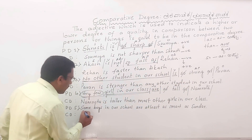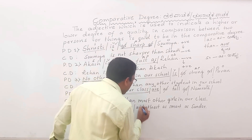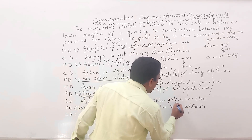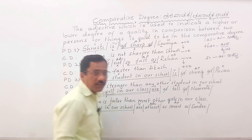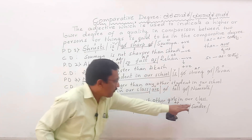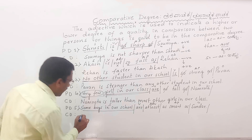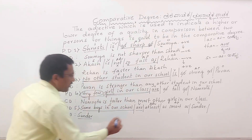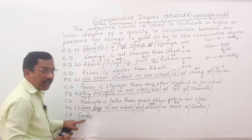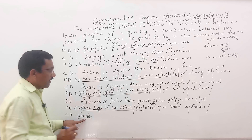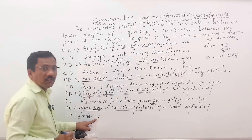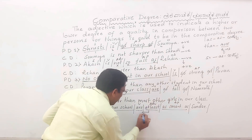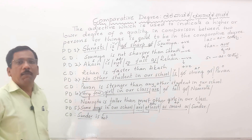Last example: Some boys in our school are at least as smart as Sundar. Here, 'some boys in our school' is the subject, 'are' is the verb, 'at least' is an adverb, and 'as smart as' is the adjective part. Sundar is the object. The object comes first in comparative degree — Sundar. Sundar is singular, so we change 'are' to 'is'. Before the adjective part, 'at least' is replaced with 'not', because when the sentence begins with 'some', we write 'not' instead of 'at least' in comparative degree.